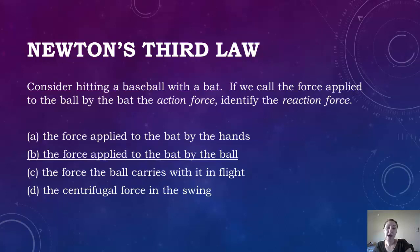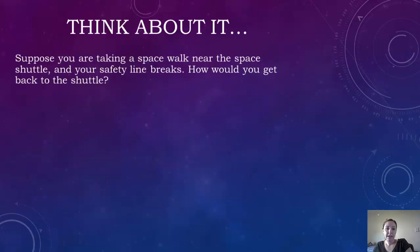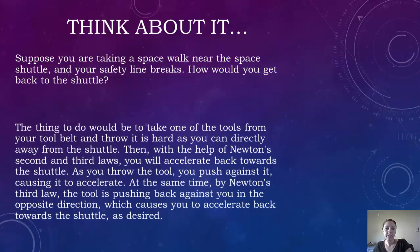Suppose you're taking a spacewalk near the space shuttle and your safety line breaks — how would you get back to the shuttle? The thing you would do would be to take one of the tools from your tool belt and throw it as hard as you can directly away from the shuttle. This causes you to accelerate back towards the shuttle because as you throw the tool, you push against it and it gives a force back, which makes you move toward the shuttle.